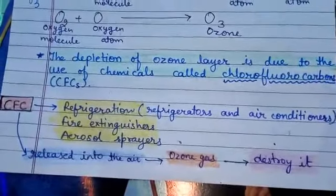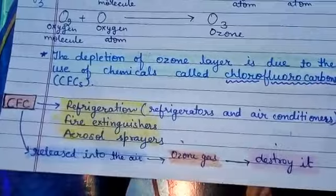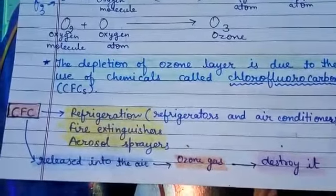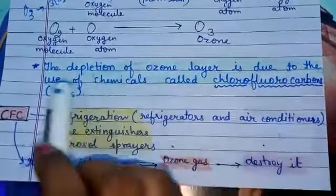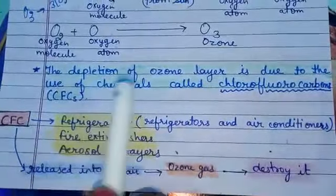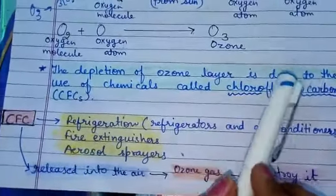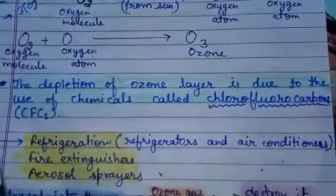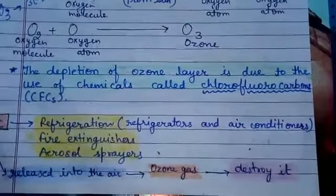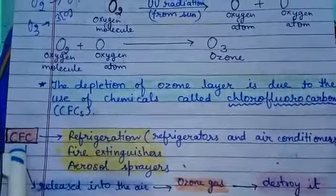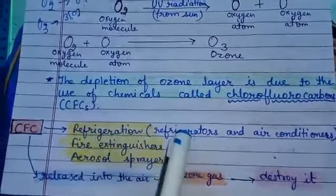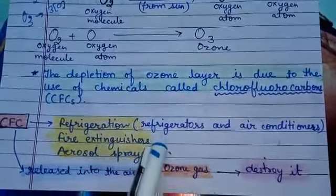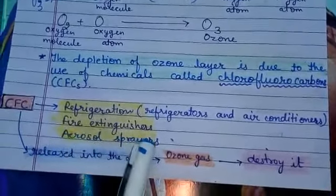It has now been found that the amount of ozone is getting depleted, due to which the ozone layer in the upper atmosphere is becoming thinner and thinner day by day. The depletion of ozone layer is due to the use of chemicals called chlorofluorocarbons, or CFCs. CFCs are chemicals which are widely used in refrigerators and air conditioners as a coolant, in fire extinguishers and in aerosol sprayers.